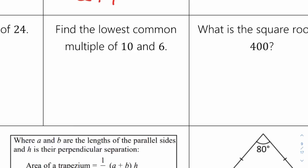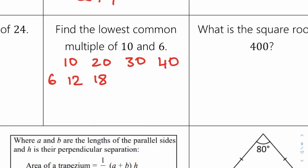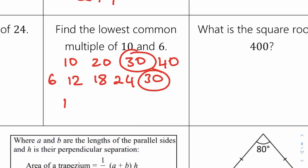We're going to list the multiples. Multiples of 10: 10, 20, 30, 40. Multiples of 6: 6, 12, 18, 24, 30. We can see 30 is the lowest common multiple, so the lowest common multiple of 10 and 6 is 30.